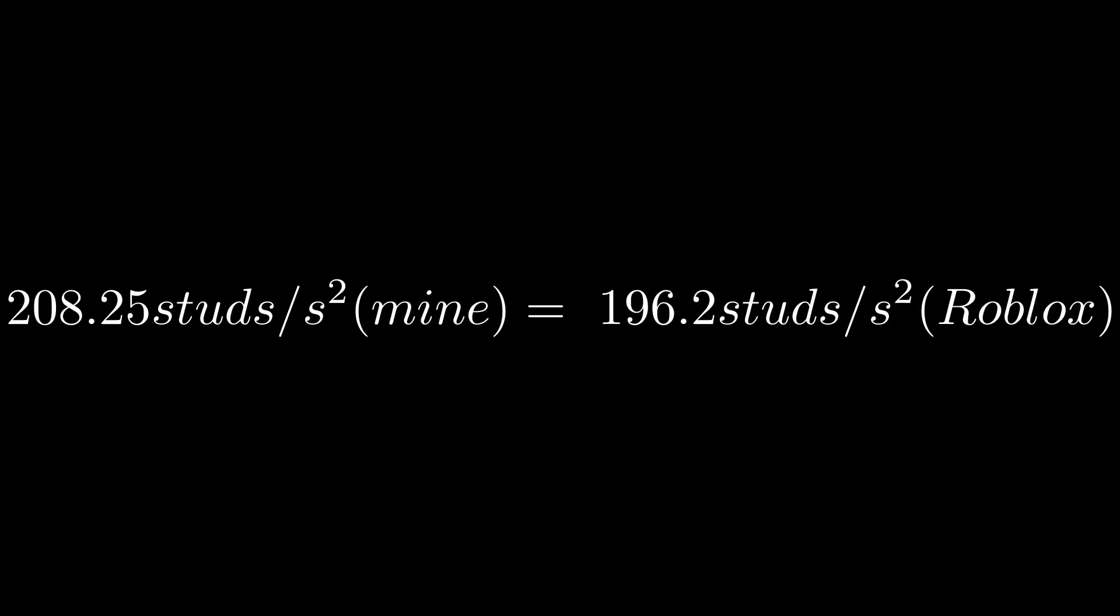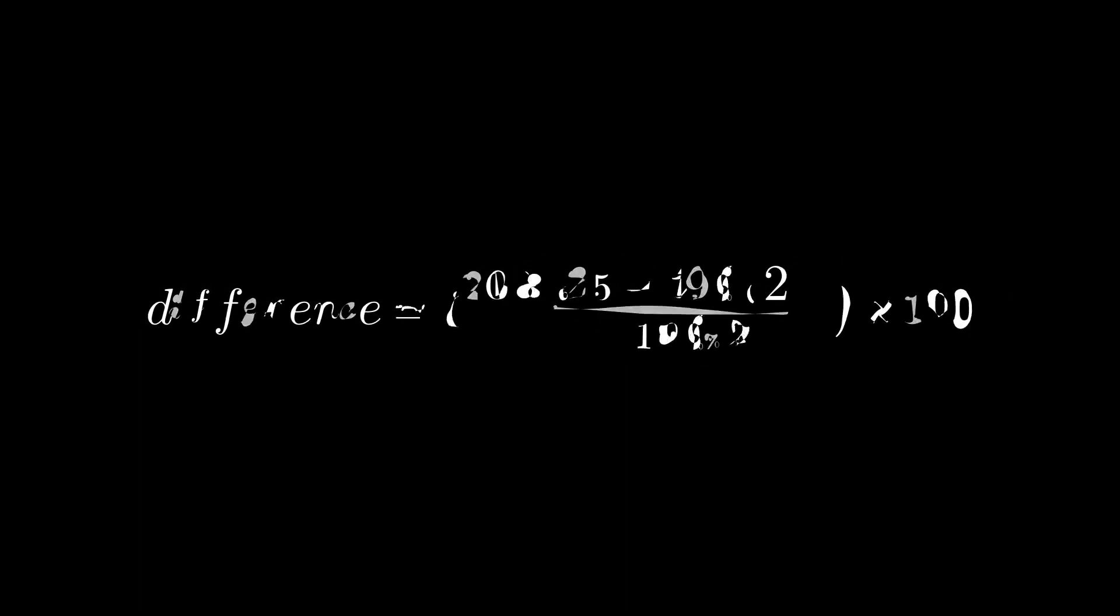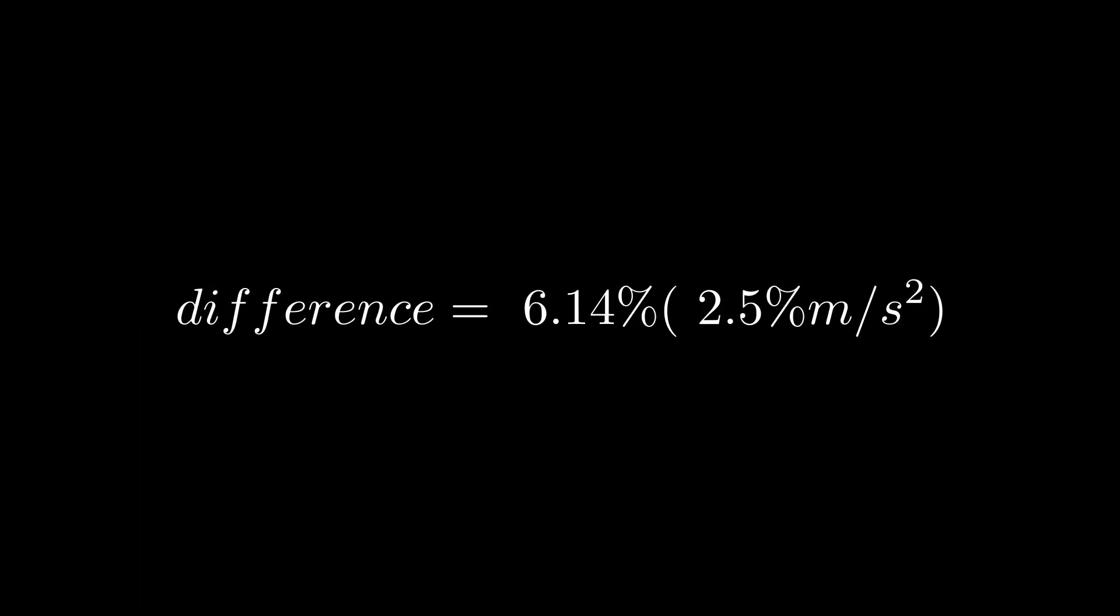And so with this, I calculated the difference between my calculations and Roblox's calculations, and I got a differential of 6.14%, or basically 2.5% in meters per second squared.